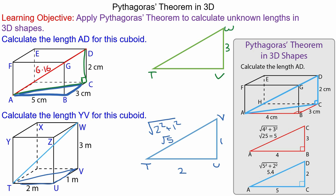So we know T to V is the square root of 5. Now we can work out the long diagonal T to W as the square root of root 5 squared plus 3 squared, which gives you the square root of 14, coming out as 3.74 centimeters. Thank you for watching, I hope you found that useful, and check out the link to the full lesson in the description.